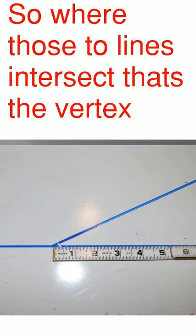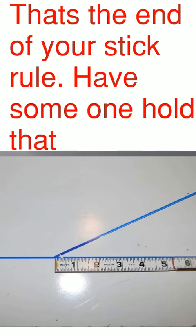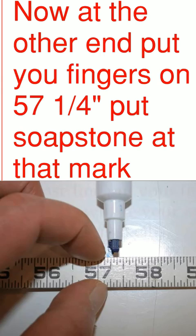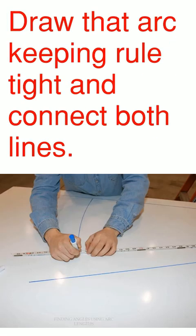So where those two lines intersect that's called your vertex. That's the end of your stick roll. Have someone hold that with some light pressure. Now at the other end put your fingers on the 57 and a quarter mark and put your soapstone at that mark and we're going to draw our arc. Draw that arc keeping the roll tight and connect both lines.